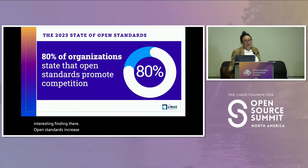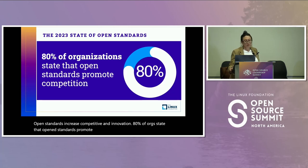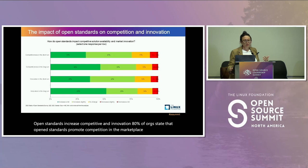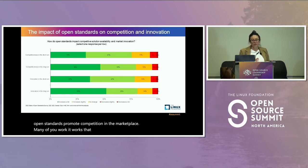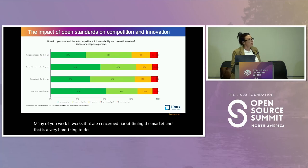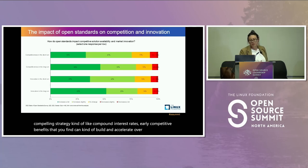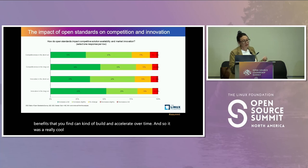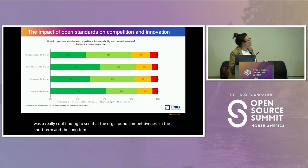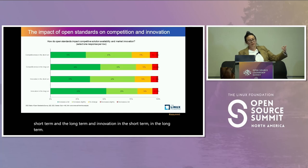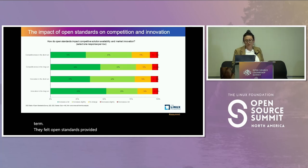Open standards increase competition and innovation. 80% of organizations state that open standards promote competition in the marketplace. Many organizations are concerned about timing the market, and open standards provide a compelling strategy — kind of like compound interest rates, where early competitive benefits can build and accelerate over time. Organizations found competitiveness and innovation benefits in both the short term and the long term.